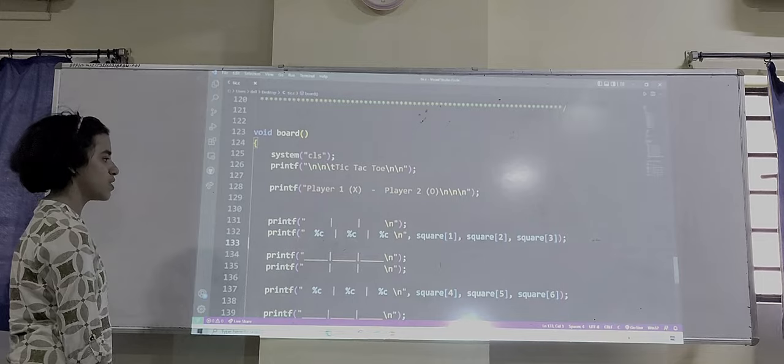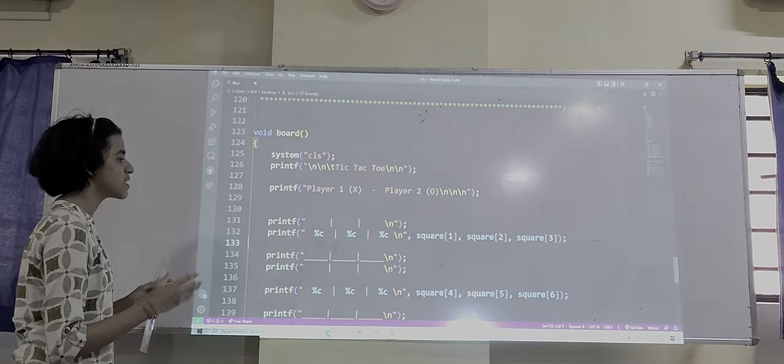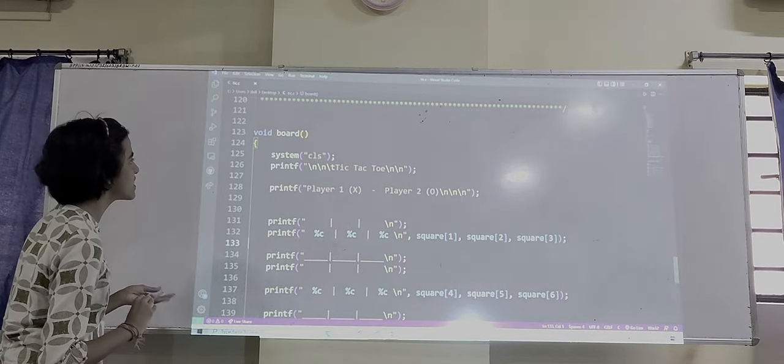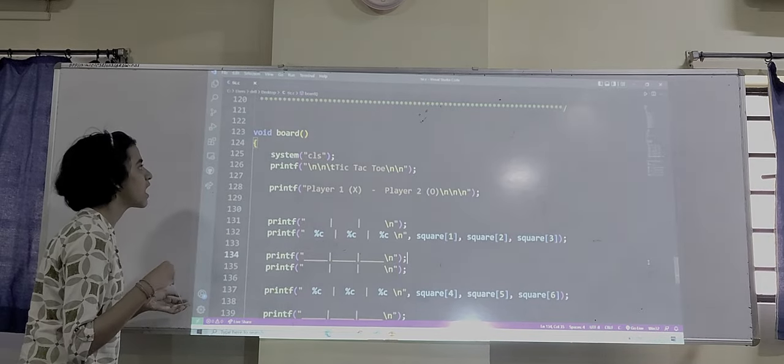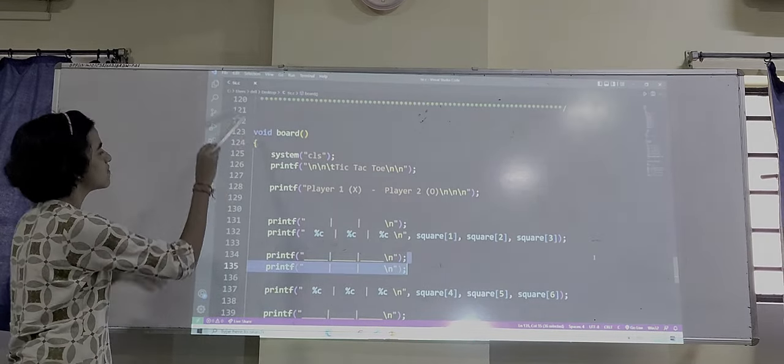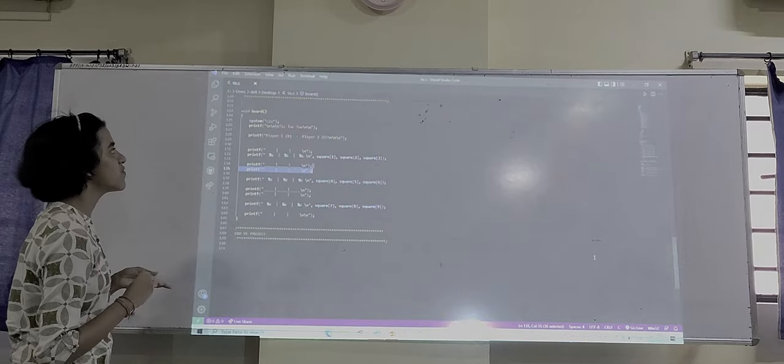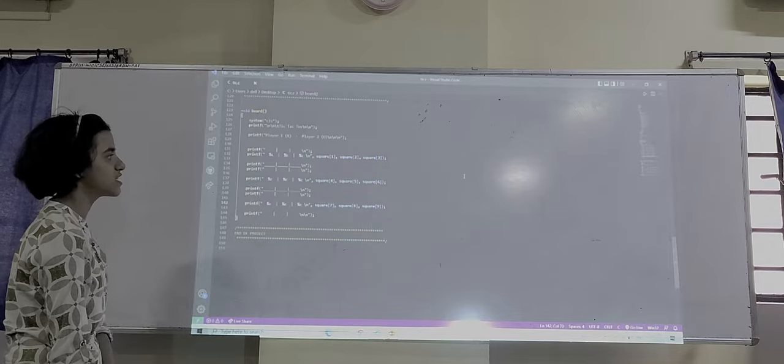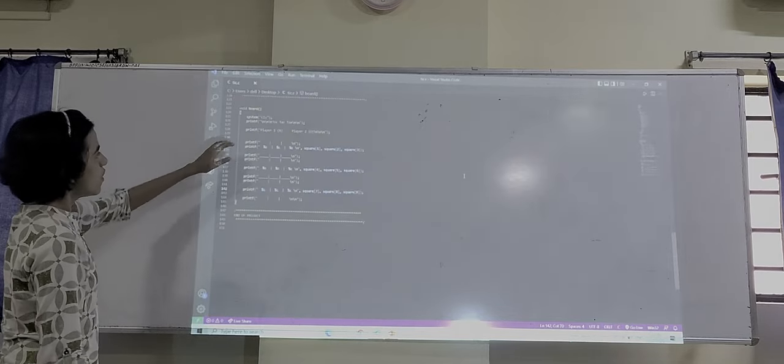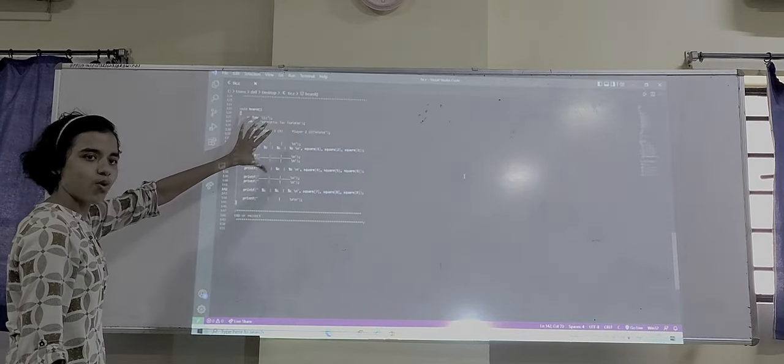Let's understand the board. Before we understand how to play the game, we have to structure the board of the game. In this Tic-Tac-Toe game, we have seen the board previously in our output. Previously we have declared our function. Here we are defining our function board.